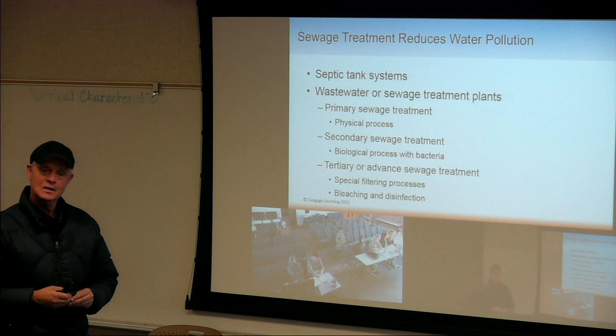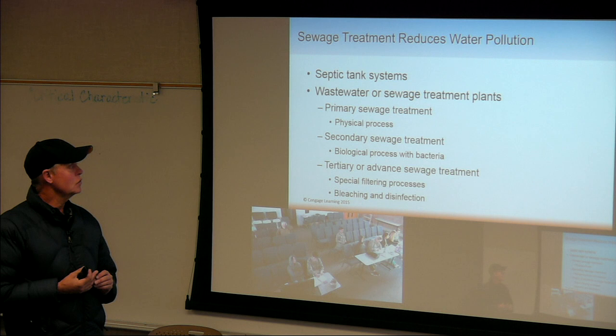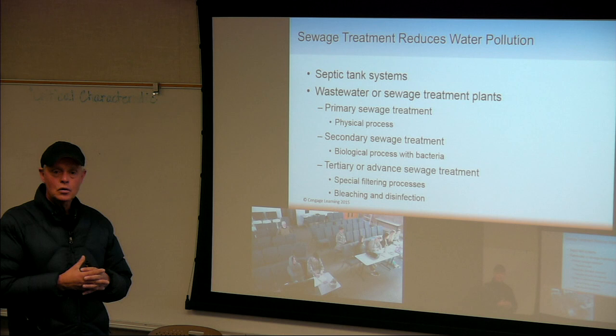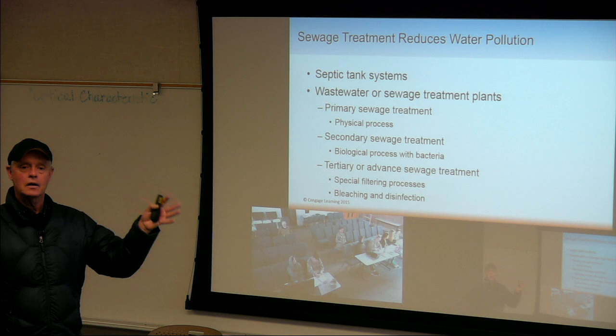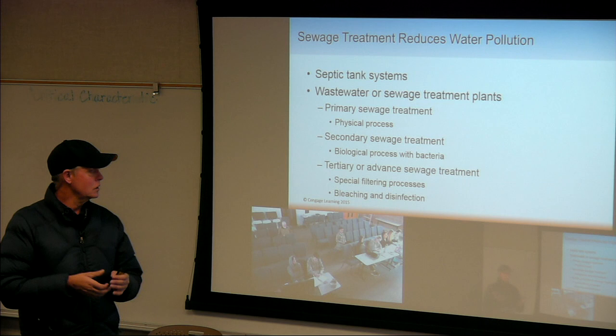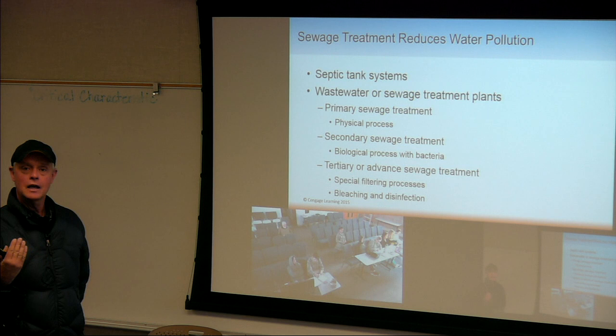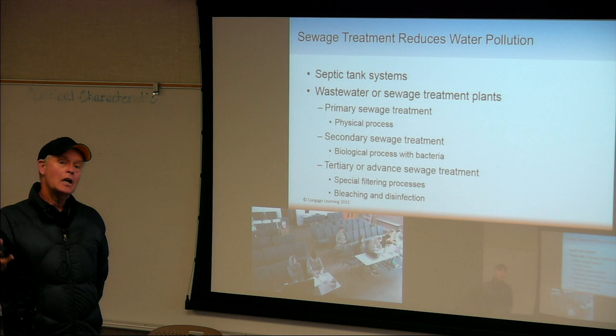If you've been there, that's the gross part — but people need that awareness that they can't just throw things down the toilet and forget about them. Secondary sewage treatment is the biological process with bacteria. They put that sludgy brown water out in tanks, put a lot of oxygen through it, and encourage aerobic bacteria and protozoa to grow — they eat it all up and decompose it. Finally, tertiary or advanced sewage treatment involves special filtering processes, then bleaching with chlorine or disinfecting with ultraviolet light so bacteria don't go back into our water supply.